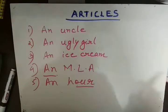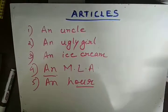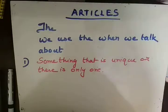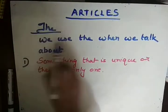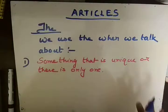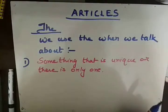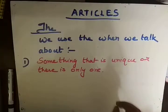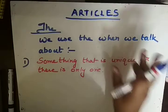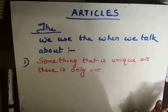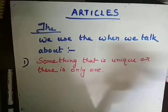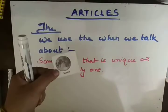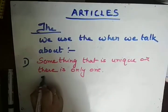Now let's see the next article — THE. A and AN are now understood; we focus on sound and singular countable nouns. For THE, the rules are slightly different and need to be memorized. We use THE when we talk about something that is unique and there is only one of it. Unique means only one exists. For example — what is this? This is the moon. Moon is only one, so we use: the moon.